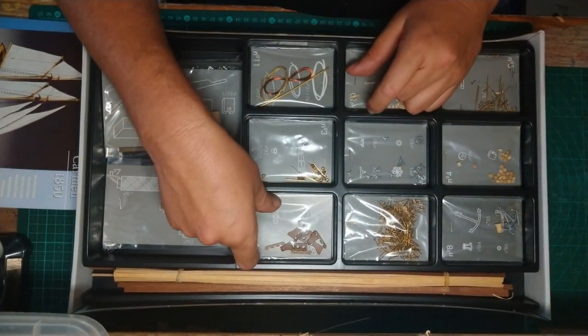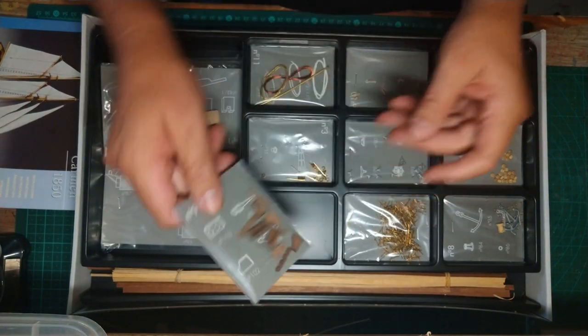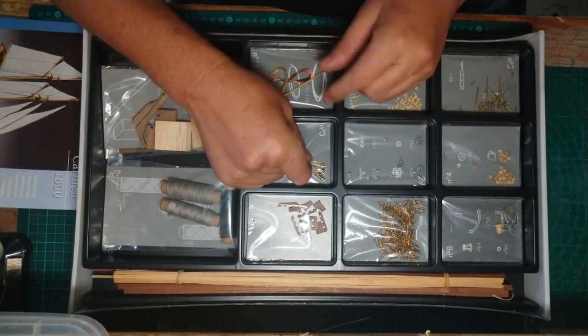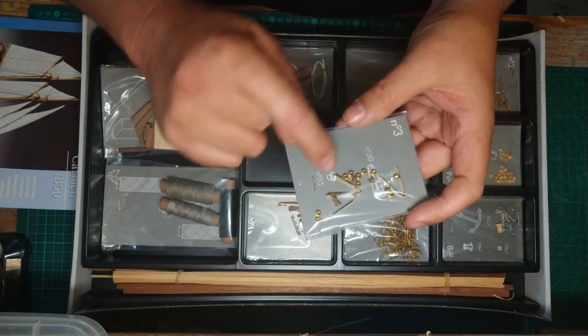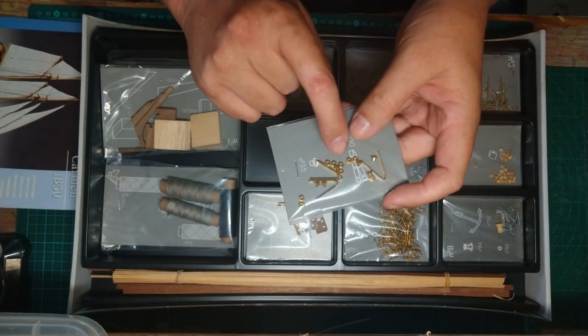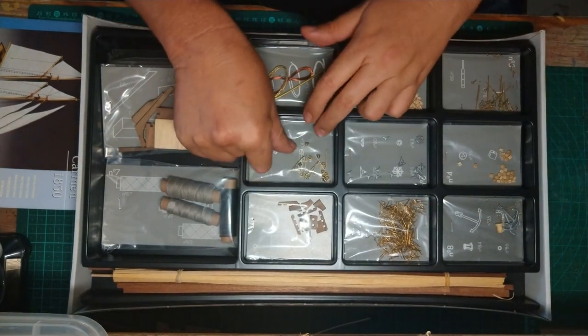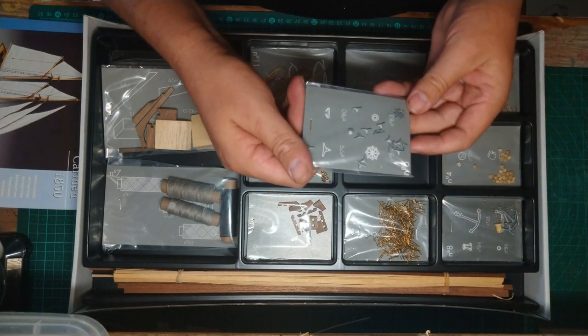In package number nine, we've got a little bit of wooden parts here as well. That is all laser cut, so it looks quite nice. Number three, we've got a couple of copper bits, and I think these are for the side windows.